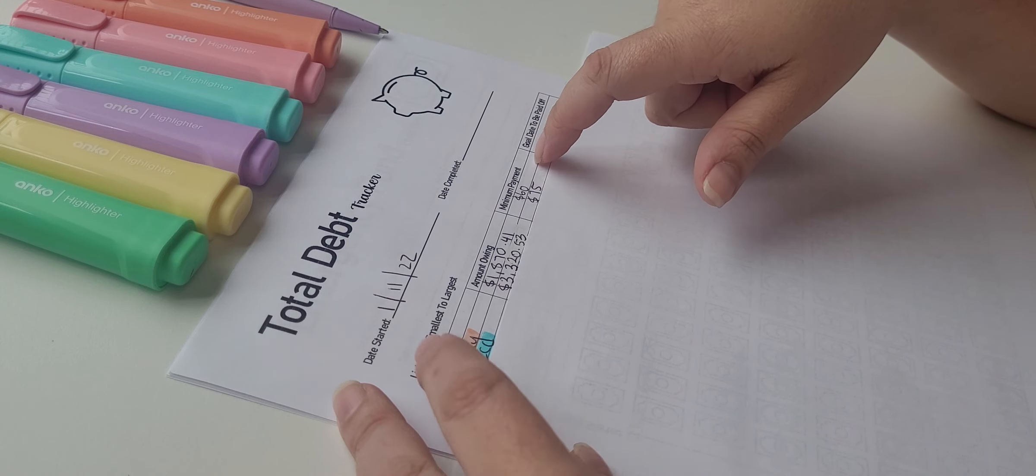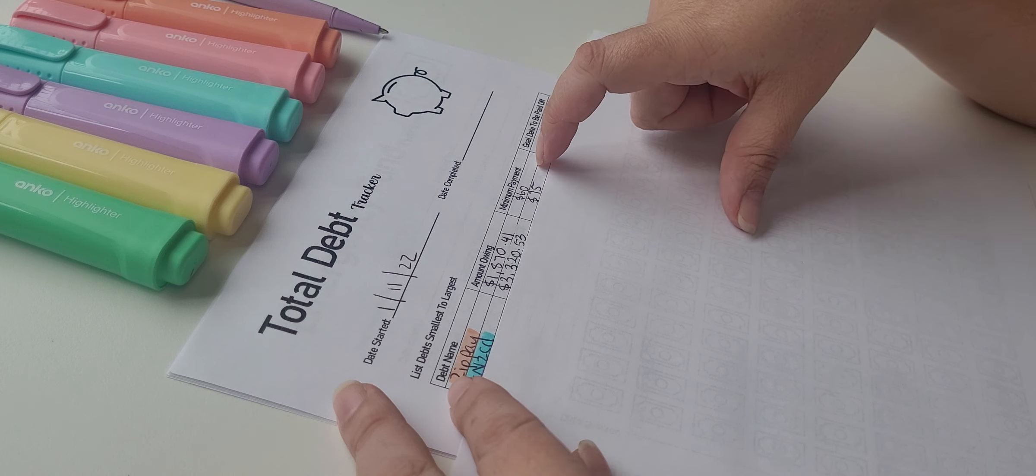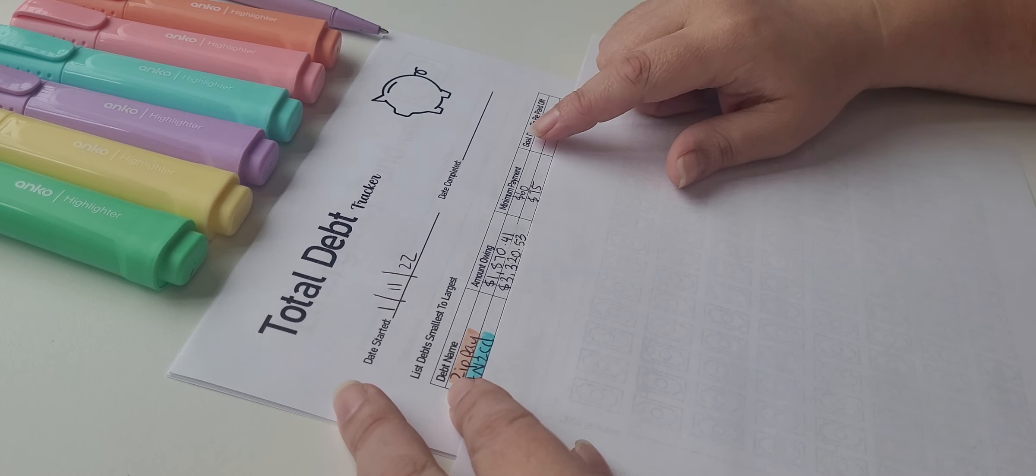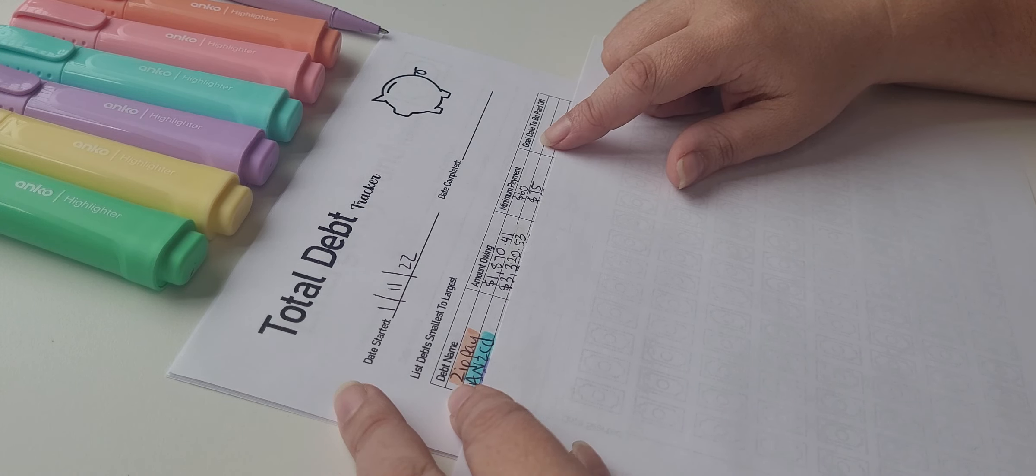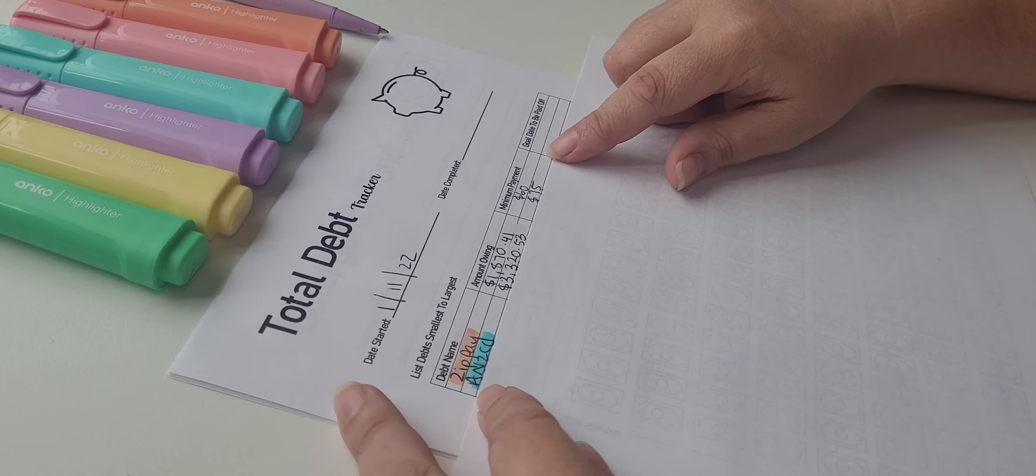I should probably tell you what we bought with this money. This one was our TV. Zip pay was our TV and a couple of pieces of small furniture. So I'm not too, I'm angry because we put it on debt. I'm not too angry because they were necessary when we moved home and had to sell everything and all that jazz when we moved from Melbourne to Brisbane.